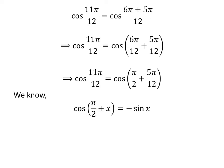We know the trigonometry identity cosine of pi upon 2 plus x is equal to minus sine of x. The proof of this identity is given in the video appearing in the right corner of this video, and the link is also given in the description section. So, cosine of 11 times pi upon 12 is equal to minus sine of 5 times pi upon 12.